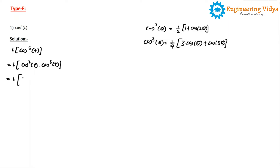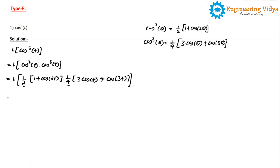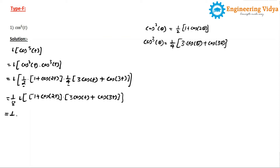Now we apply these formulas. We have (1/2)(1 + cos 2t) multiplied by (1/4)(3cos t + cos 3t). The multiplication of 1/2 and 1/4 gives 1/8, so 1/8 goes outside and inside the bracket we have (1 + cos 2t)(3cos t + cos 3t).